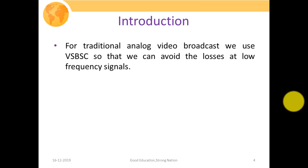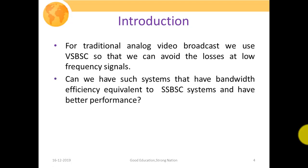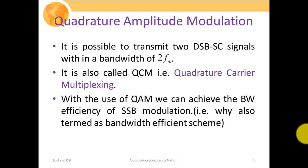For traditional analog video broadcast we use vestigial sideband suppressed carrier systems, in which we pass one complete sideband and the vestige or portion of the other sideband to avoid losses at low frequency signals. So the question arises: can we have systems with bandwidth efficiency equivalent to single sideband suppressed carrier systems and better performance? The solution is QAM — quadrature amplitude modulation.